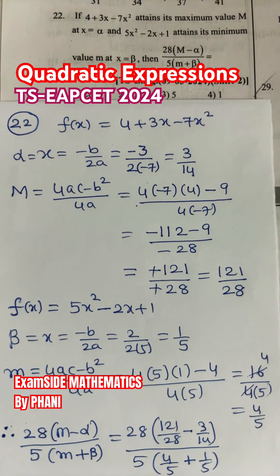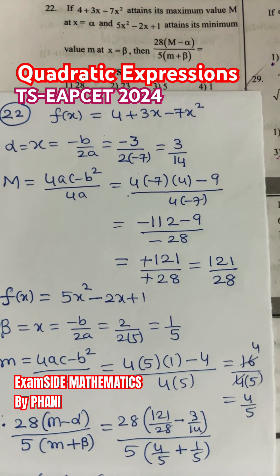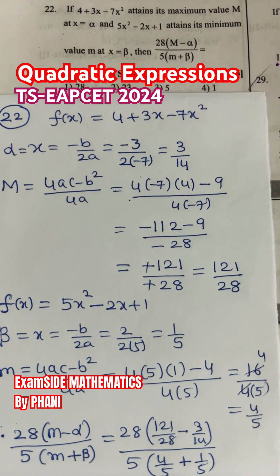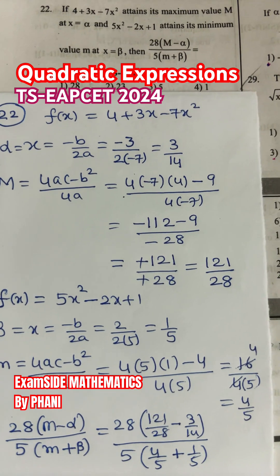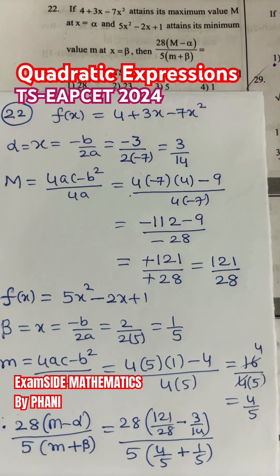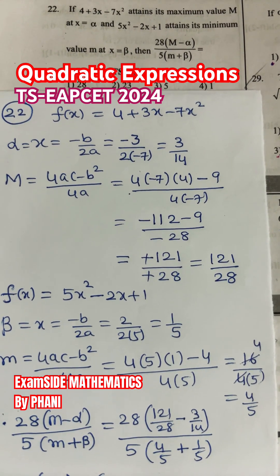In this, you see that question: if 4 + 3x - 7x² attains its maximum value capital M at x = α, and 5x² - 2x + 1 attains its minimum value small m at x = β,